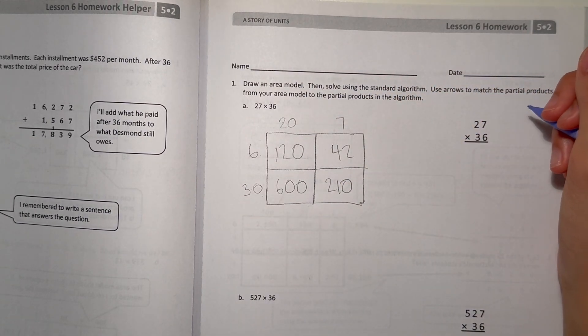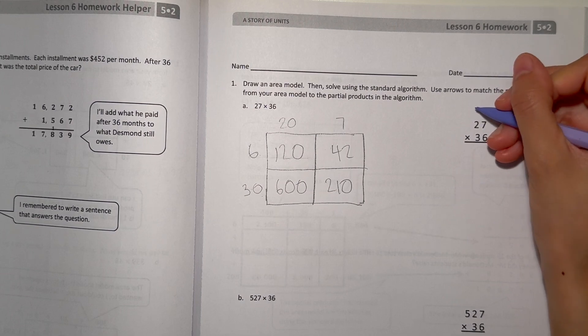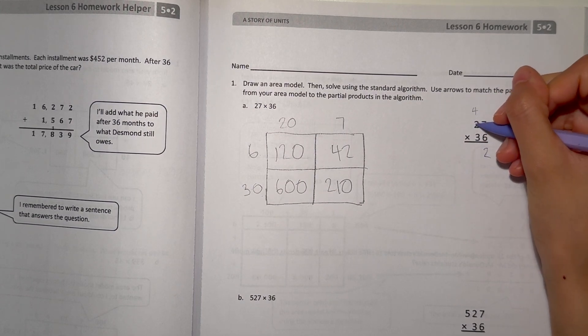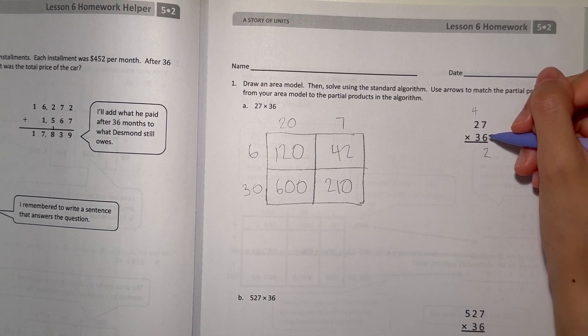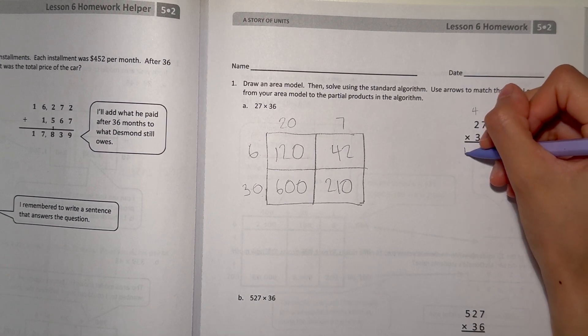So now let's multiply using standard algorithm. 7 times 6 is 42. And now 2 times 6 is 12 but plus 4 is 16.